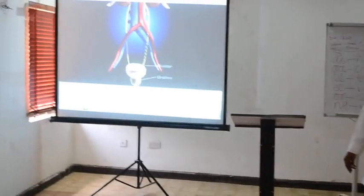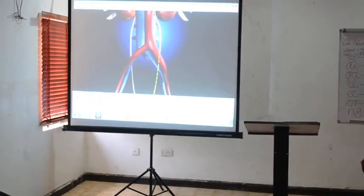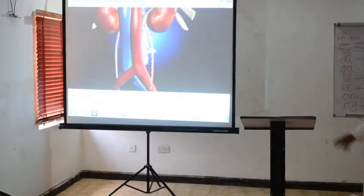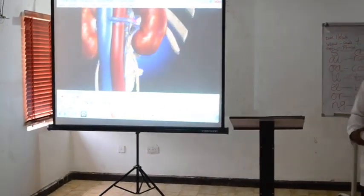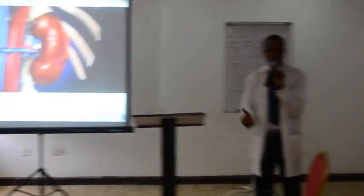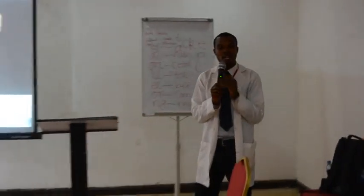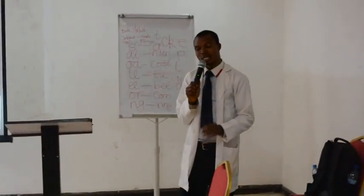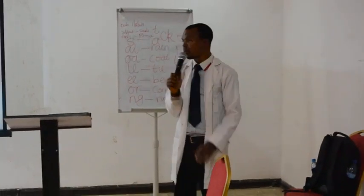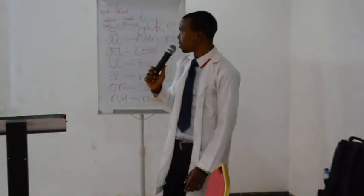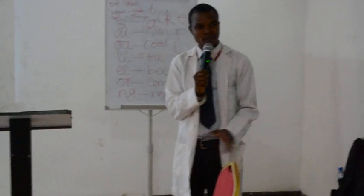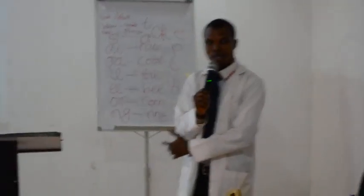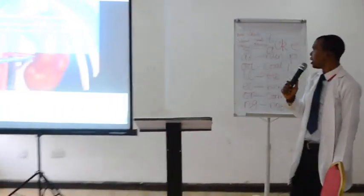The bladder is the collector of the urine produced by the kidney, and from there it exits outside the body. The kidney has a special filter — we call it the nephron. The purpose of this video is to give you an idea of what a nephron is.